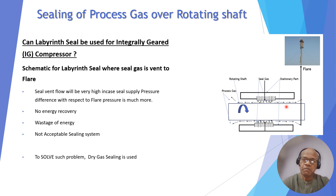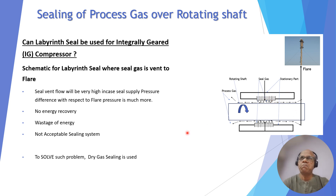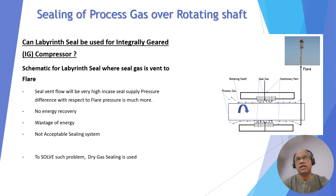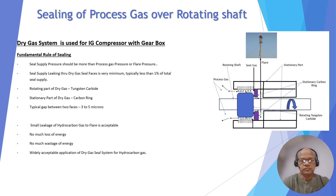Because of these huge losses venting to flare and wasted energy, only a labyrinth cannot be used for integrally geared compressors. This is precisely why the dry gas seal system comes into the picture — to minimize these losses.